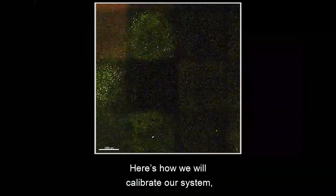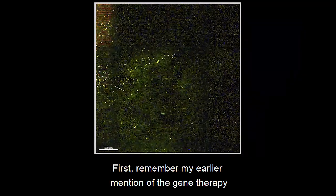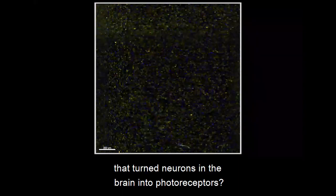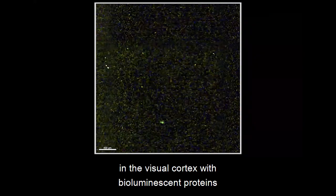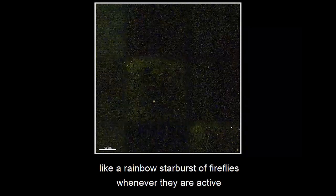Here's how we will calibrate our system, and it takes some scientific innovation. First, remember my earlier mention of the gene therapy that turned neurons in the brain into photoreceptors? By also using gene therapy to fill neurons in the visual cortex with bioluminescent proteins in multiple colors, we can make these neurons blink like a rainbow starburst of fireflies whenever they are active.